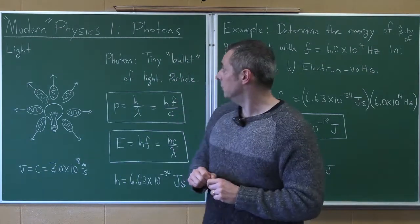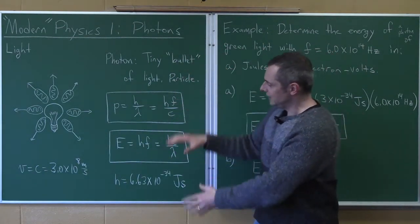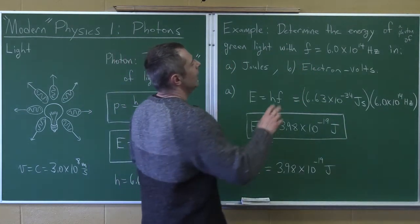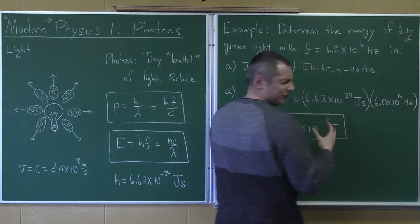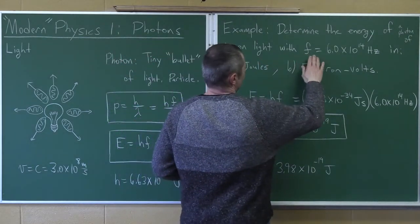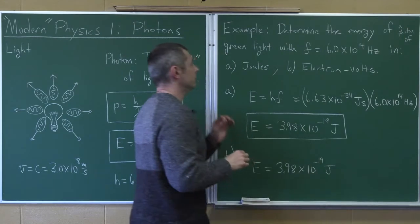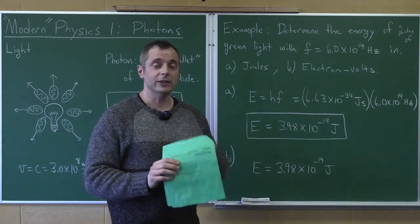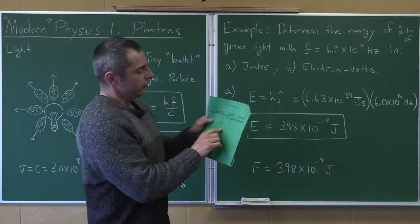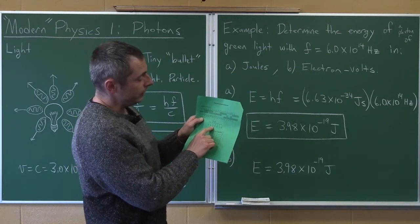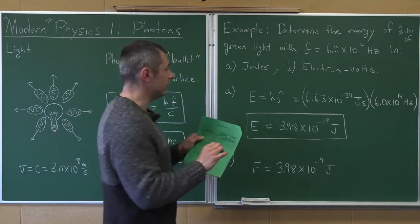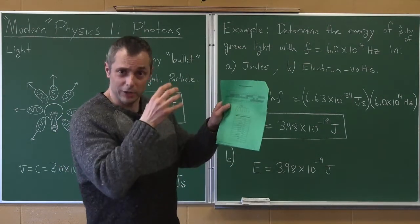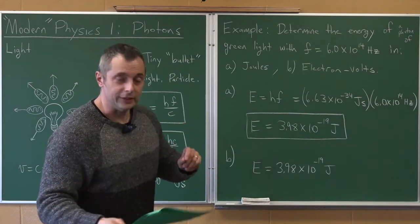All right, so let's move on to our first example. Determine the energy of a photon of green light with the frequency of 6 times 10 to the 14th hertz in joules and in electron volts. Now, first thing. Why is that green light? Well, remember in the wave section, we learned about the electromagnetic spectrum. And you could look up that any light that's vibrating at a frequency between 6.1 and 5.2 times 10 to the 14th, which this is, when that light goes in your eyes, you would perceive that as green.